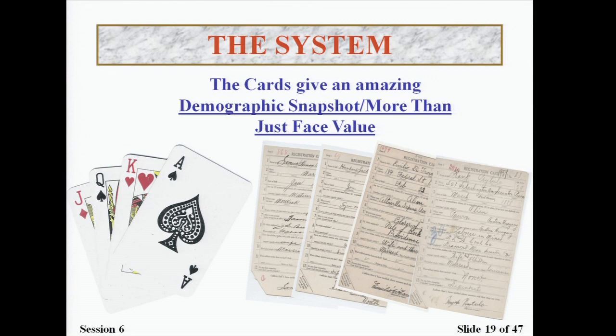The draft cards give an amazing demographic snapshot — they're more than just face value. When you look at the cards, you see the man's name, personal information, address, and occupation. It gives a good snapshot of what was going on in the area where the man registered. There was also a lot going on behind the scenes with bickering among draft board members, locals who knew the registrants, and those who felt the process was unfair.